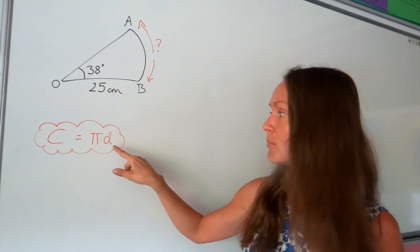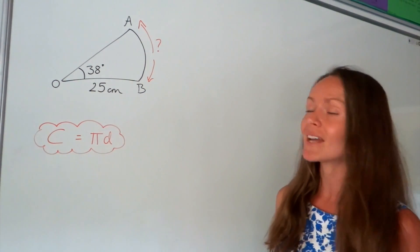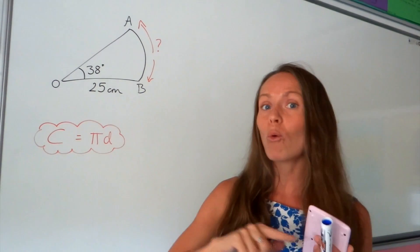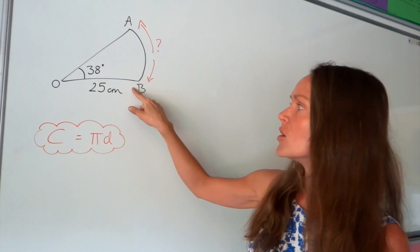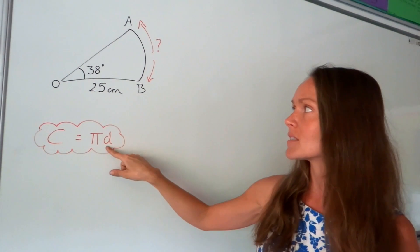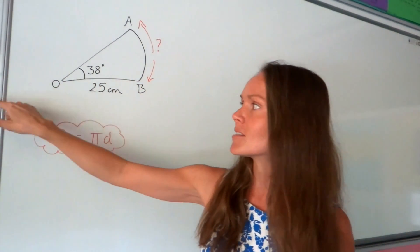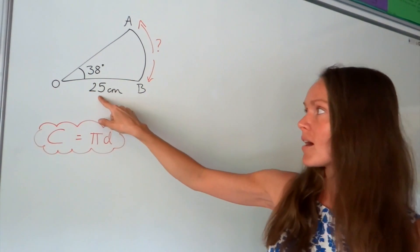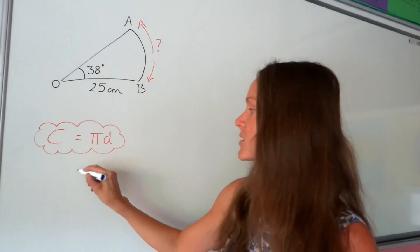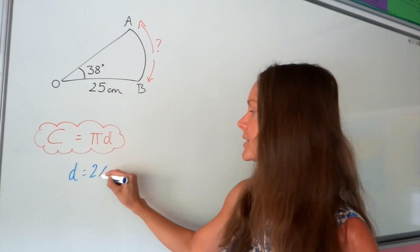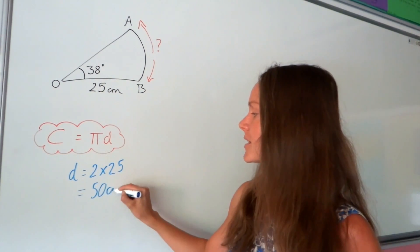Circumference equals pi multiplied by the diameter, and remember the diameter is the distance all the way across the circle. Here we've been given the radius, so to work out the diameter we need to double that distance. We multiply 25 by 2, so the diameter is 50 centimetres.